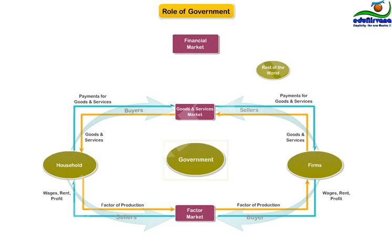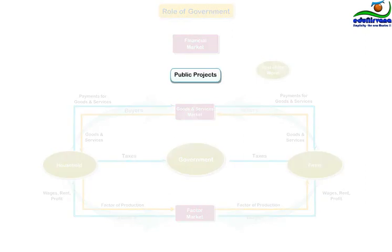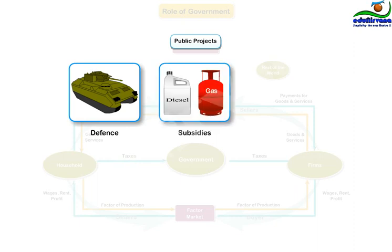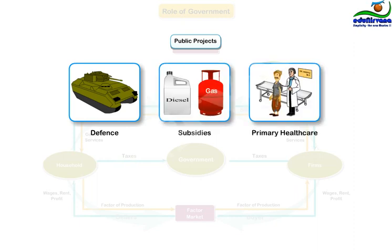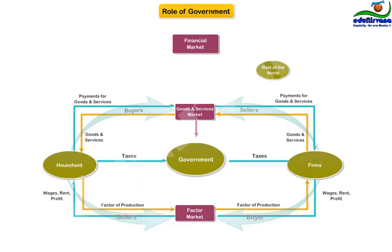Let us see the government role first. Government is a key participant in an economy. The source of funds for government is tax — direct and indirect — from firms and households. The utilization of these funds goes into public projects, defense, subsidies, primary health care and education, infrastructure, and direct buying from the goods and services market.